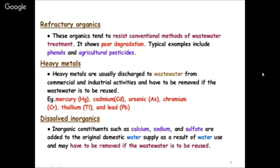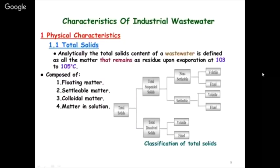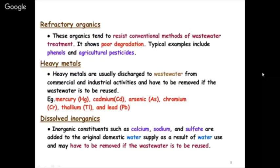Refractory organics resist conventional wastewater treatment methods - surfactants, phenols, agricultural pesticides are all organic in character but are not easily biodegradable. Heavy metals such as mercury, cadmium, arsenic, chromium, aluminum, and lead must be addressed depending on the industry type. Dissolved inorganics - salts like sodium chloride, sodium sulfate, calcium sulfate - are also present in large amounts and must be removed. These are the contaminants of concern that must be identified before treatment can be designed.